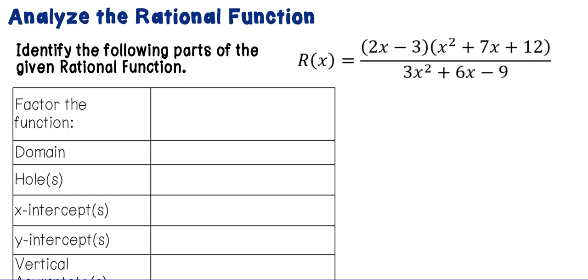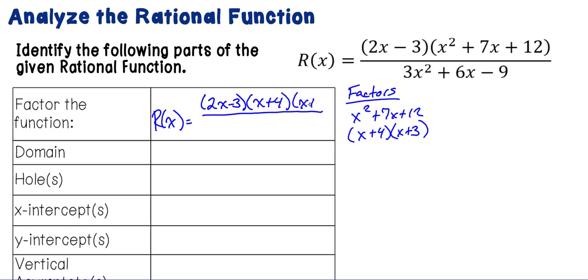Looking at this example, we want to analyze this rational function and identify the parts of the given rational function. The first thing I would do is find my factors for the top and the bottom. For the numerator, we see 2x minus 3 is already factored, but we still need to factor x squared plus 7x plus 12. That would actually factor into x plus 4 times x plus 3. So that means for r of x, our top factors are going to be 2x minus 3 times x plus 4 times x plus 3.